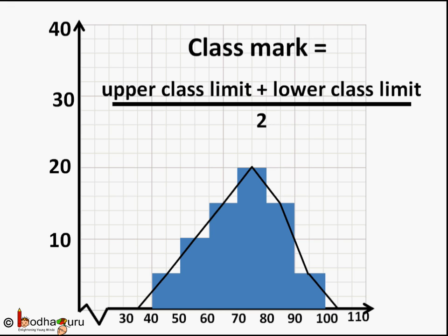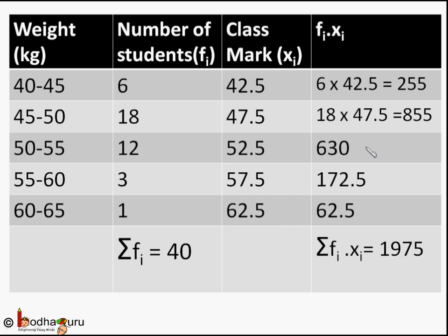Here also we would use the class mark. So class mark for 40 to 45 class is 40 plus 45 by 2, which is equal to 42.5. We add it into the column.